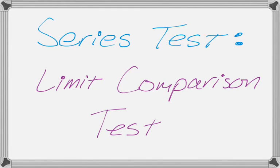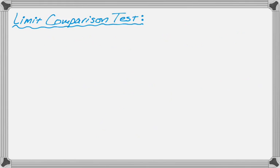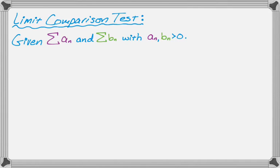In this video we're going to talk about the limit comparison test. We need to know how to state it. If we are given two different series — the sum of a_n and the sum of b_n — and we know that a_n and b_n are both greater than zero, then we calculate a limit.